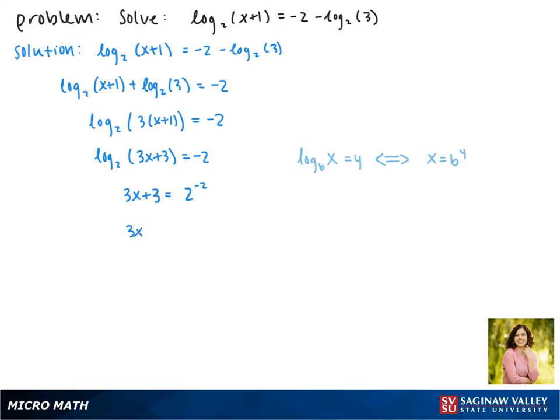2 to the negative second power is 1 fourth, so 3x plus 3 equals 1 fourth. Now subtracting 3 from both sides gives us 1 fourth minus 12 fourths, which is negative 11 fourths.